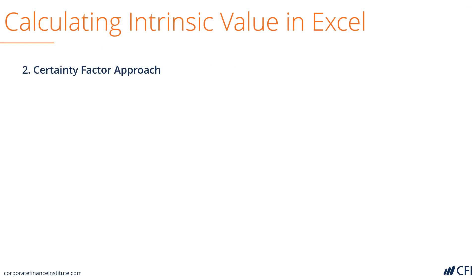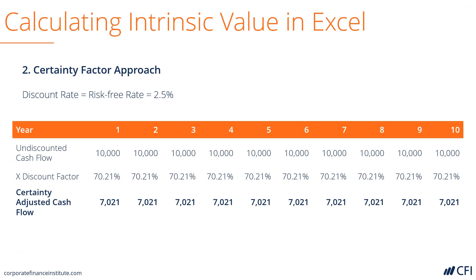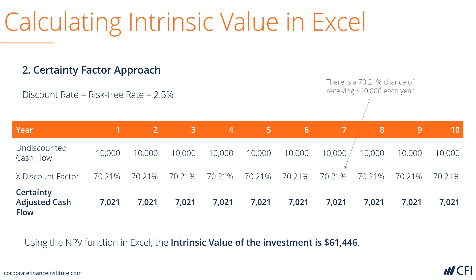Now let's look at using a certainty factor. This time, we just use a discount rate of 2.5%, which is the risk-free rate of return on a government bond. We then take each cash flow, multiply it by our certainty factor, and that factor may be different in each year. For this simple example, we've used the same factor in each year, but you may have higher certainty about the earlier cash flows and less certainty about the later cash flows. Then, using the NPV function and the discount rate of 2.5%, you can see that we get the same intrinsic value using this approach.